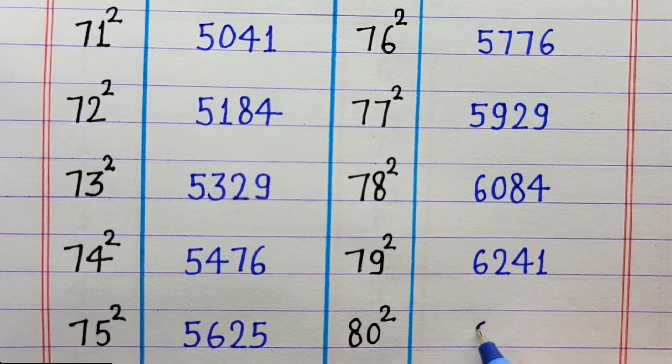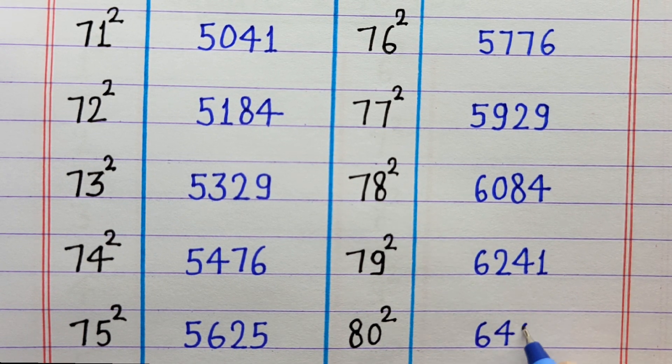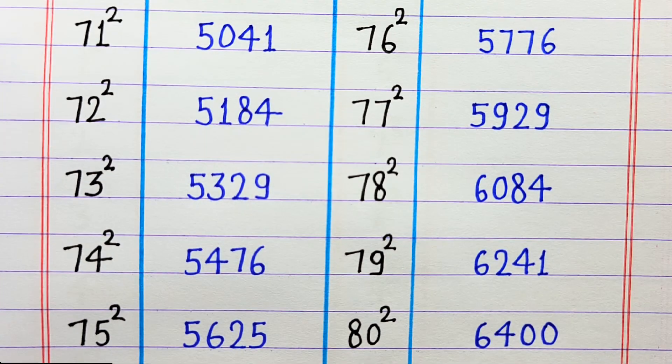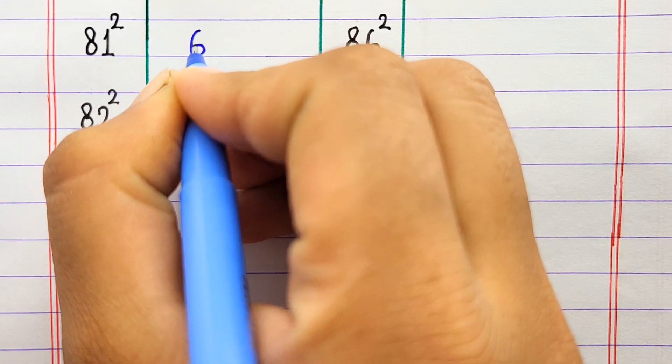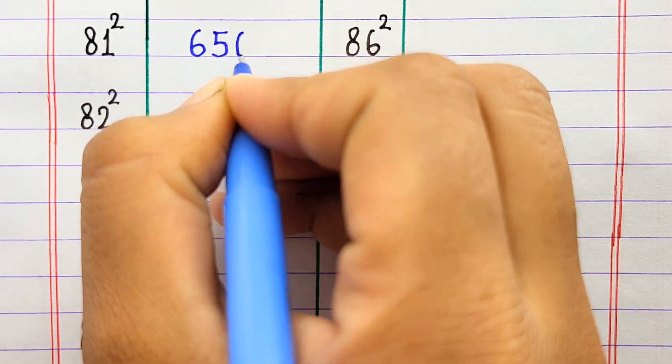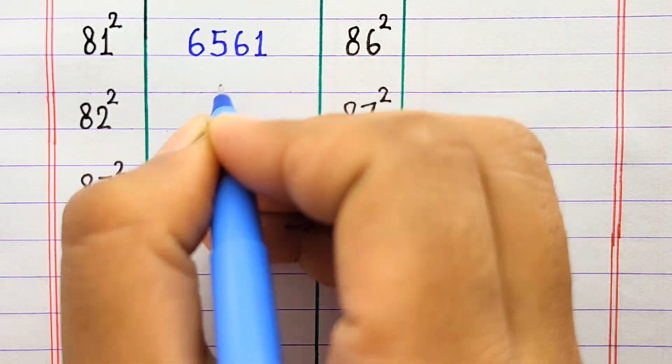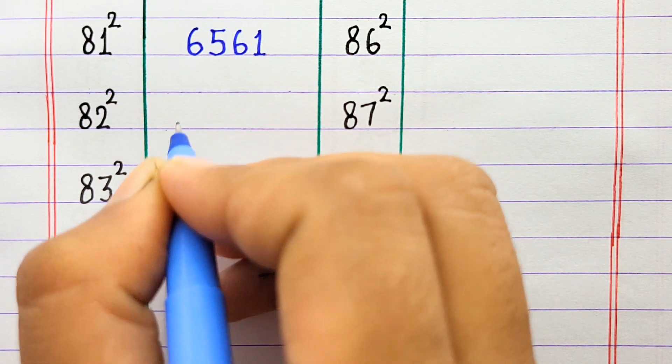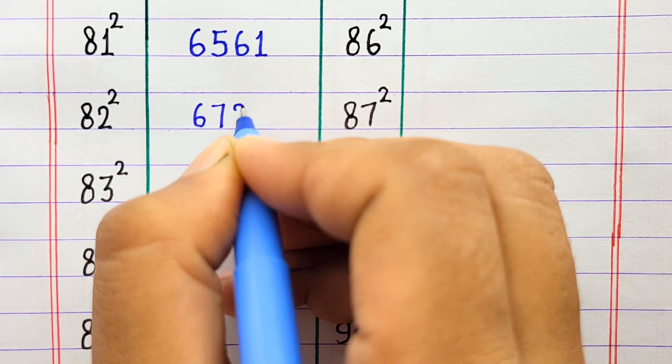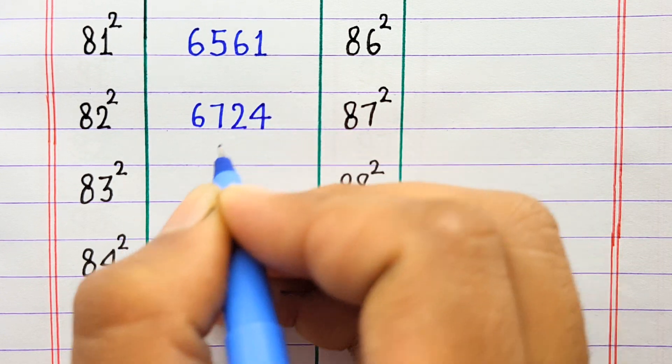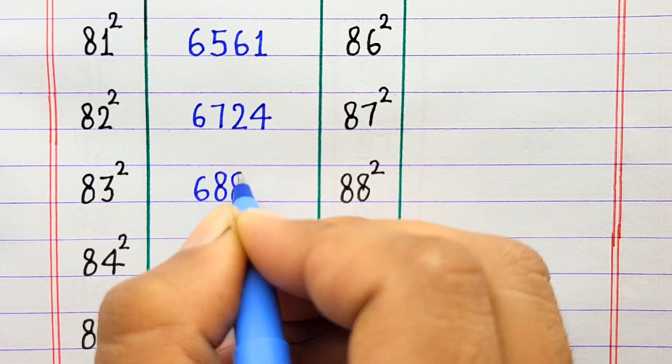80 ka square 6400, 81 ka square 6561, 82 ka square 6724.